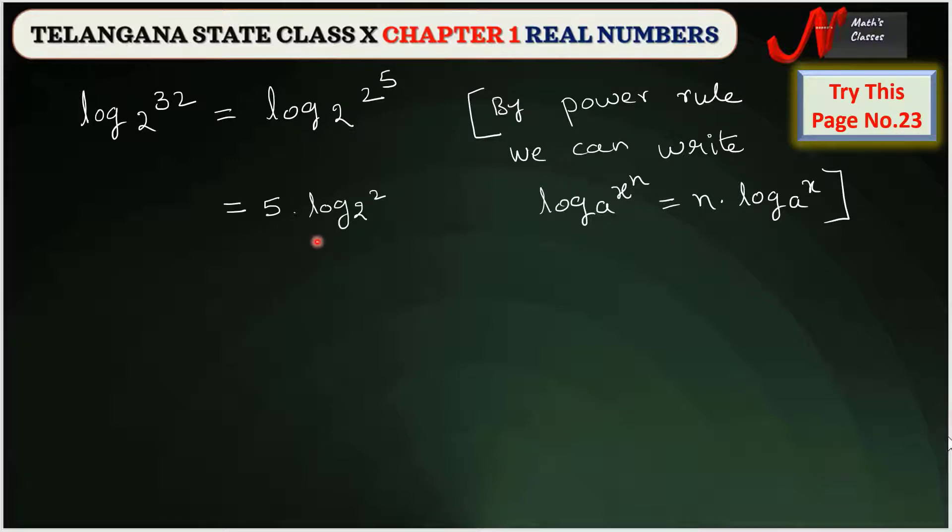We already know that log₂2 = 1. The above equation can be written as 5·1, which equals 5.